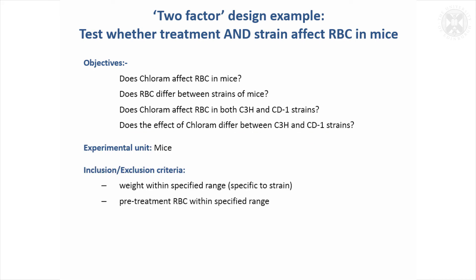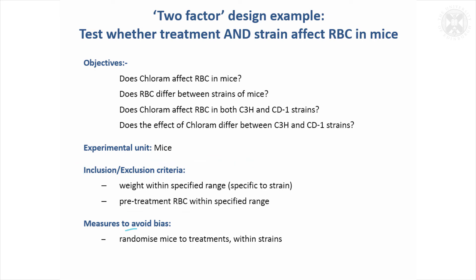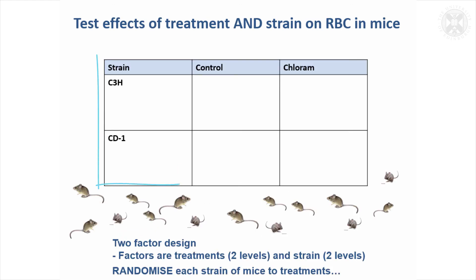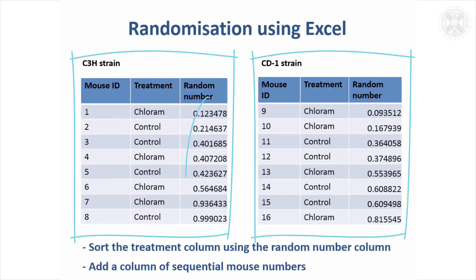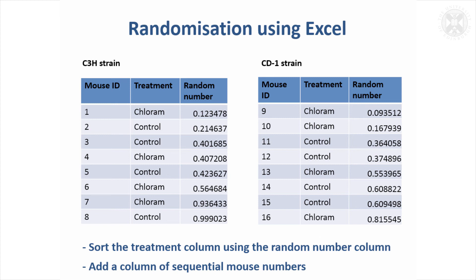Just the same as before, the experimental unit is going to be the mice, and we could apply inclusion and exclusion criteria. Again we want to randomize, but this time we need to randomize within the strains. With two strains of mice we would randomize within each of them separately, just as before — using a random number and sorting by that. This can be done simply in Excel, but if you're using statistical packages there is usually a random function that will do the randomization for you as well.